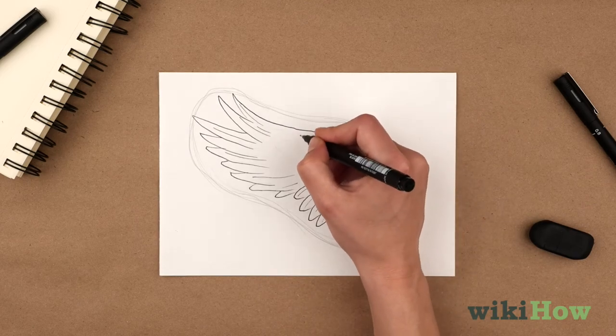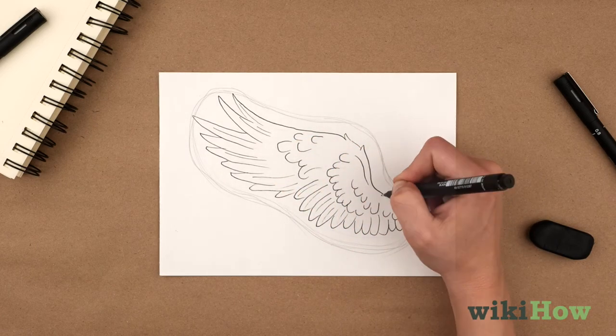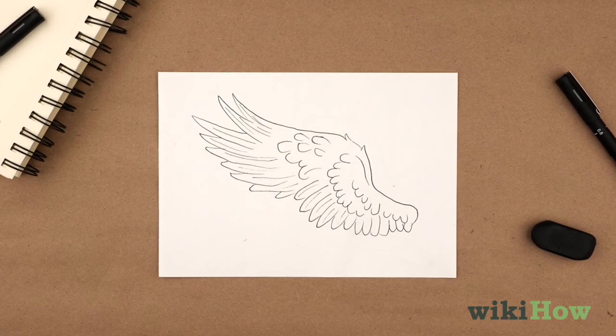However you do it, remember to start with two to three rows of shorter feathers at the top of the wings, then fill in the longer flight feathers underneath.